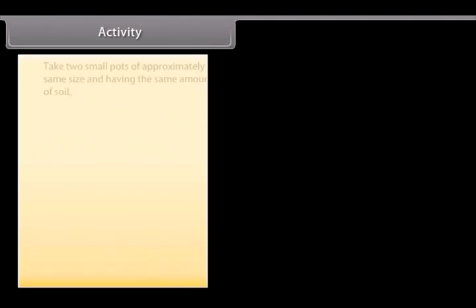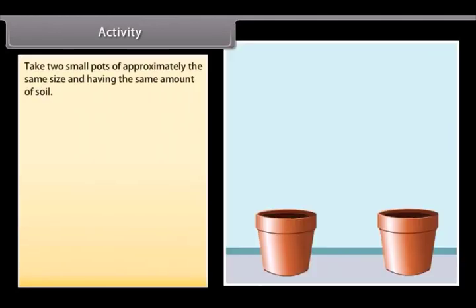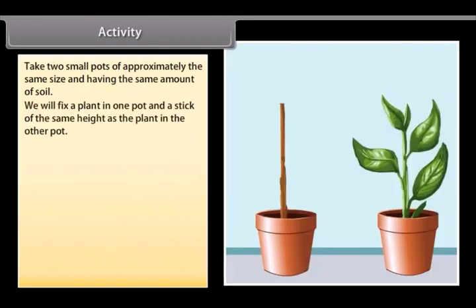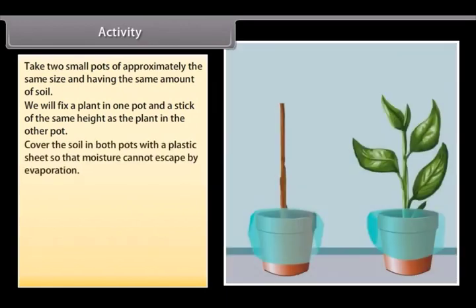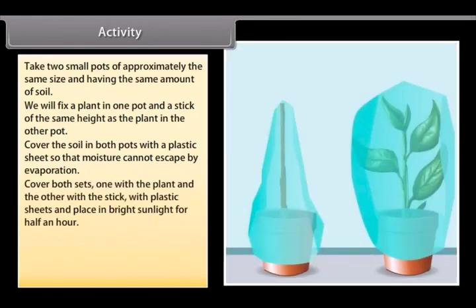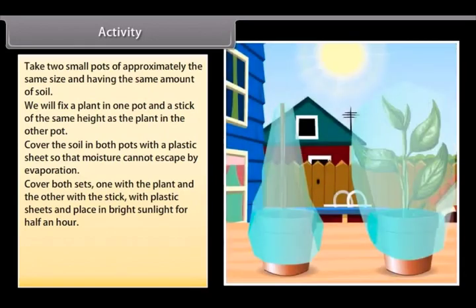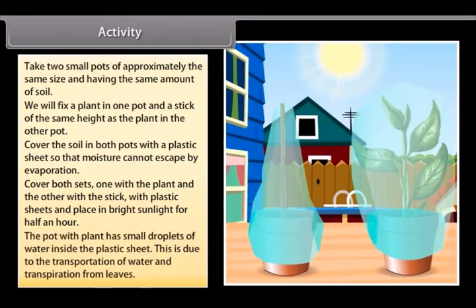Activity. Take two small pots of approximately the same size and having the same amount of soil. Fix a plant in one pot and a stick of the same height as the plant in the other pot. Cover the soil in both pots with a plastic sheet so that moisture cannot escape by evaporation. Cover both sets with plastic sheets and place in bright sunlight for half an hour. The pot with plant has small droplets of water inside the plastic sheet. This is due to the transportation of water and transpiration from leaves.